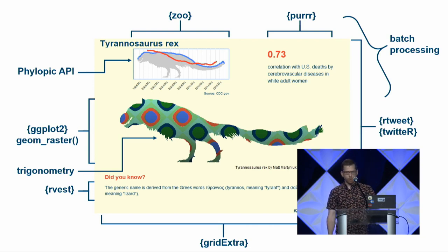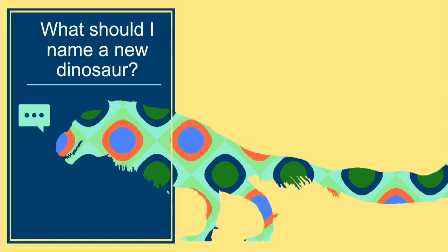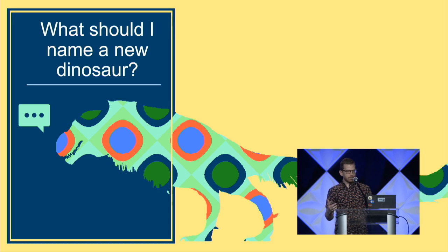Before I move on, take one more look at that dinosaur. We used data science to make this really cool dinosaur. Right now it only exists on my computer, but pretend it's real for a second — we have a brand new problem. What do we name it? Or, if you're a paleontologist about to publish this brand new dinosaur discovery, what are you going to call it?